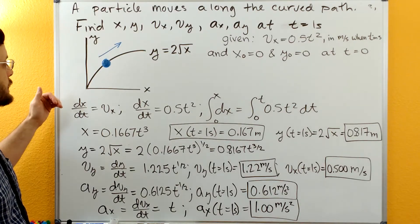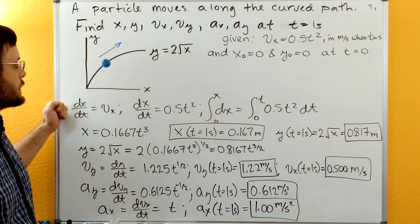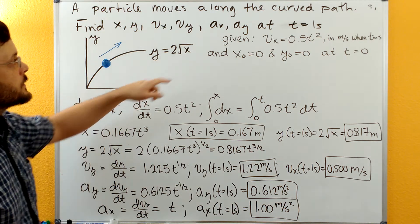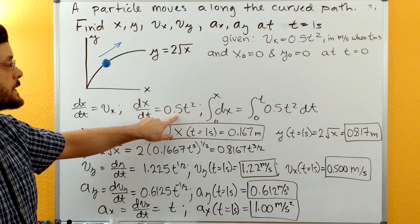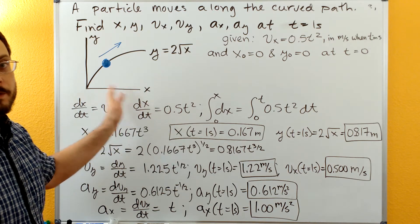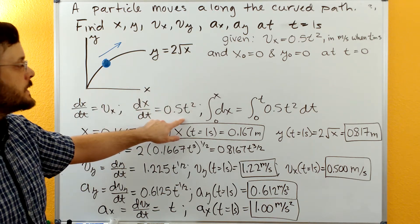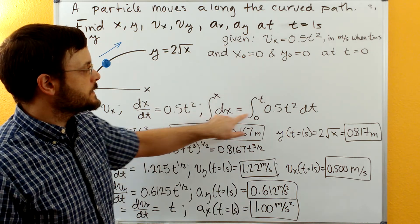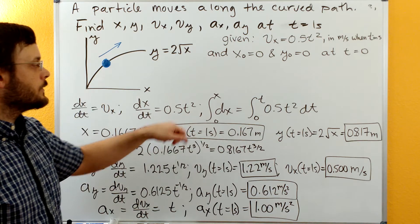So let's go through and solve this one. Let's start off with dx/dt equals vx. So we have our expression for vx, we can plug this in. We need to now separate variables, so we have our x's on one side and our t on the other side. We'll multiply through by dt. Then we get dx equals 0.5 t squared dt. Now we can integrate this.